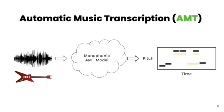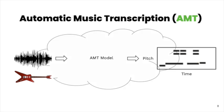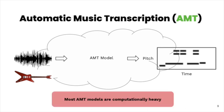Another constraint that has helped AMT research progress is to only consider monophonic audio — that is, audio where only one note is present at a time. These models typically are instrument agnostic, but cannot be applied successfully to polyphonic recordings. Finally, as we've seen in many other applications, in order to improve model performance, we develop models with increasing computational complexity, and AMT is no exception. Large models are both computationally costly to develop and too heavy or slow to run in many end-user applications.